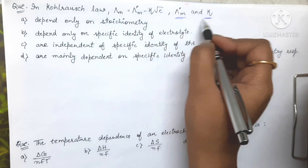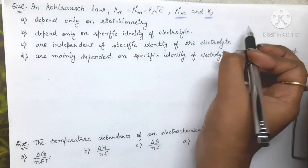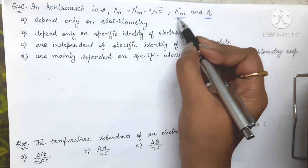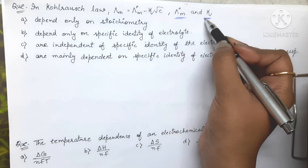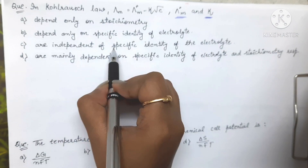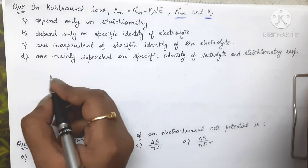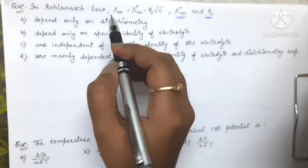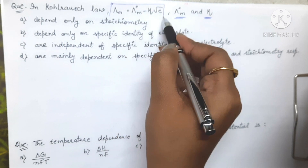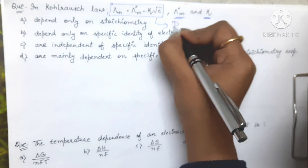We have to find out on which factors λ°m and κ depend, or whether they will be independent of certain factors. First, we should know what those factors are. We will start by discussing κ. If you look at this equation, this is basically the Debye-Hückel-Onsager equation.